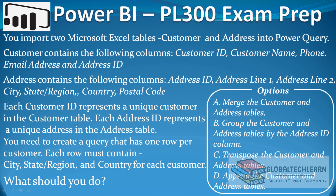As per the given case we have to get customer name details along with the address details. The first option is to merge the Customer and Address table. In Power BI, merge is a kind of join where we can join two tables to get data in a single table — so this option looks correct. The next option is to group the Customer and Address table by the address ID column. Since both tables have unique IDs, group by will not work as we have primary keys and no duplicate or repeated data, so we can ignore this option.